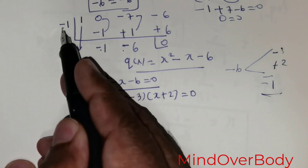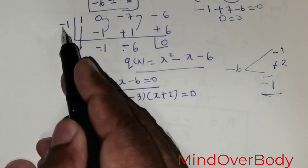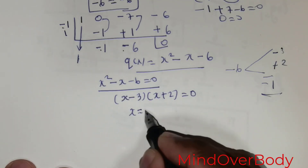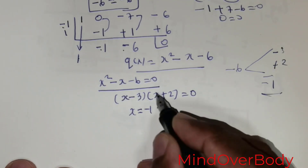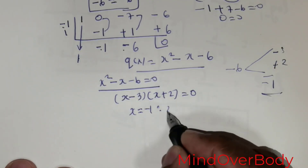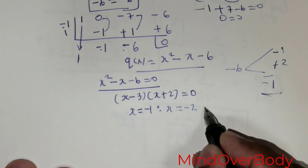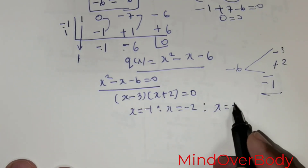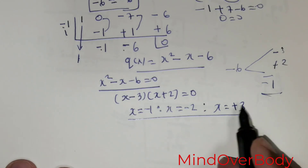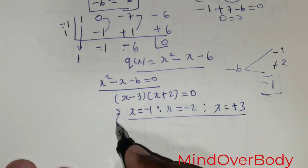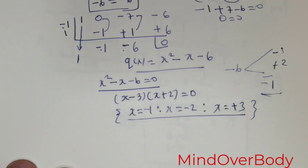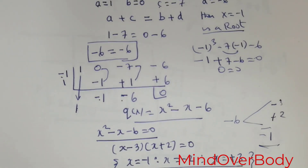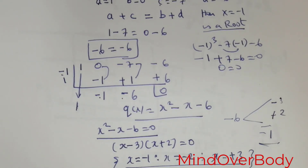So the solution: x equals negative 1 is one root, x equals negative 2 is the next root, and x equals positive 3 is the third root. We have obtained all 3 roots by this technique. This is the first method. Now I will move on to show you the second method.